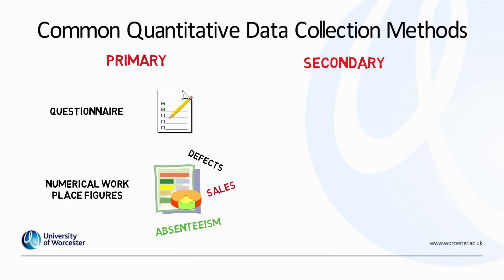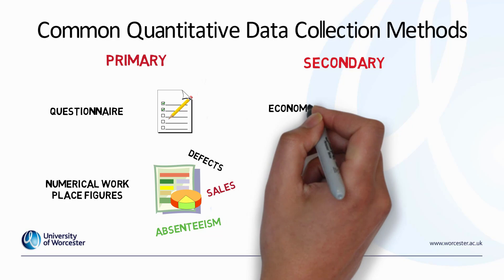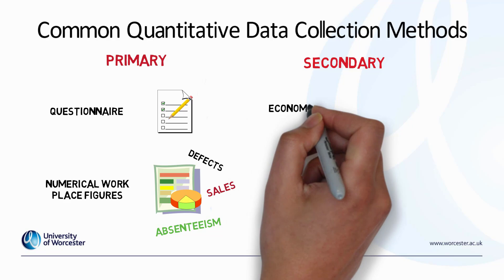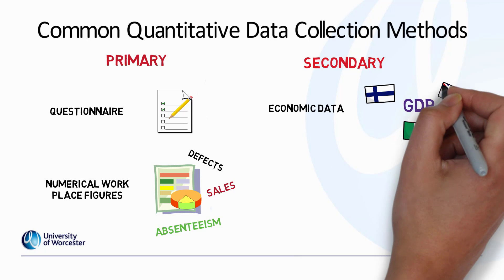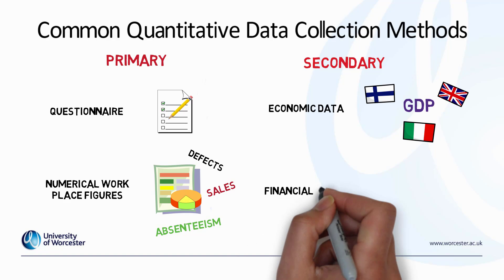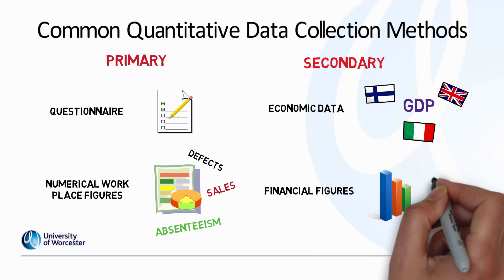When it comes to secondary data, the most common types of quantitative secondary data are economic data such as GDP figures and economic growth figures. A lot of accounting-based research also looks at financial figures, such as data sets like profit and loss accounts or balance sheets from company accounts.